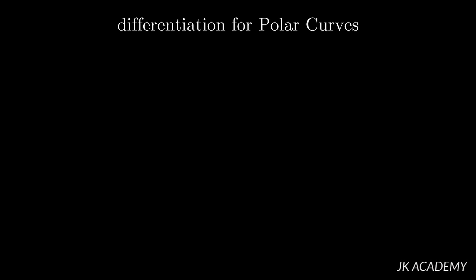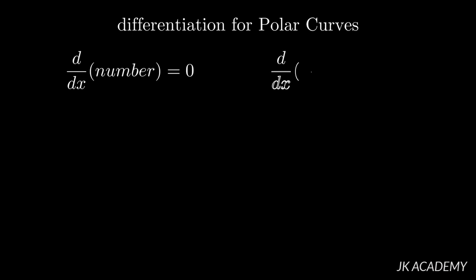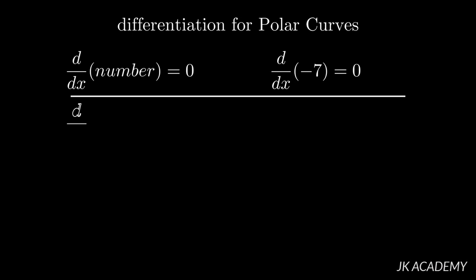In this video we're going to look at the formulas of differentiation. Formula number one: d by dx of a number is equal to zero. Differentiation of any number is equal to zero. For example, d by dx of minus seven is equal to zero — minus seven is a number, so differentiation of that is zero.